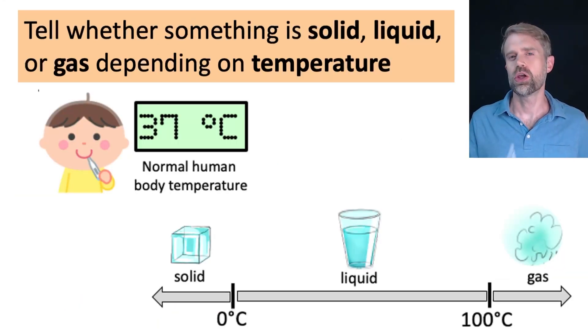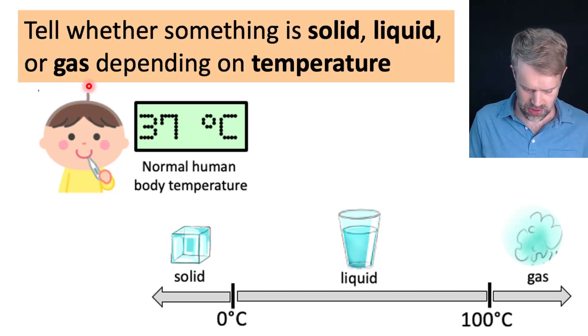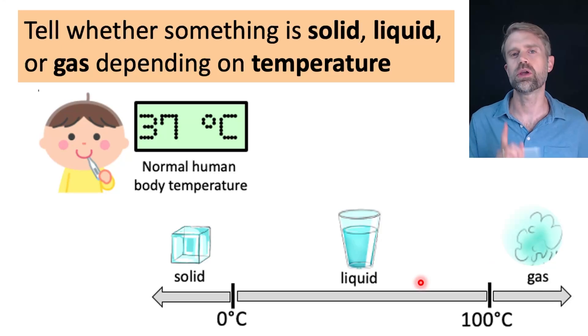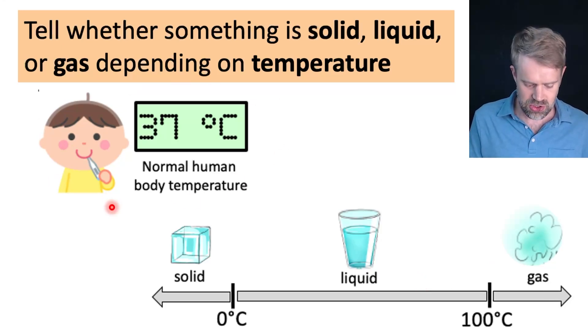And finally, you also want to be able to tell whether something is solid, liquid, or gas, depending on the temperature. There are a few important numbers to have memorized here. Water freezes at 0 degrees Celsius and boils at 100 degrees Celsius. And normal human body temperature is 37 degrees Celsius. Then you can use a little bit of common sense to figure out what state of matter you'd get at a certain temperature.